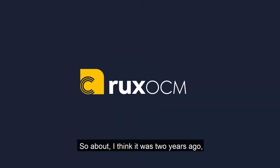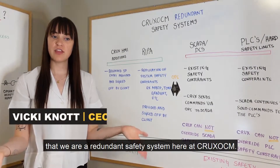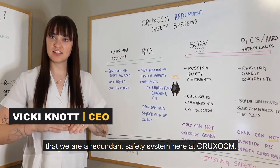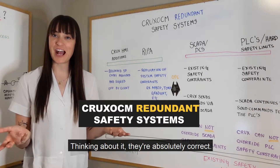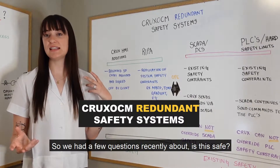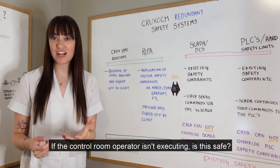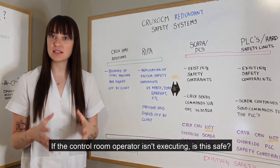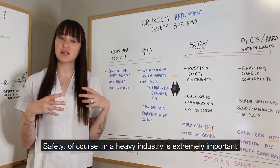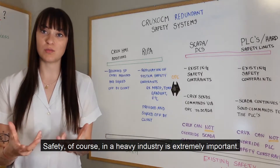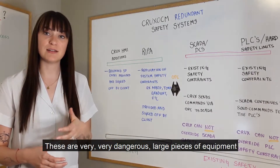About two years ago we had a customer tell us that we are a redundant safety system here at Crux OCM — thinking about it, they're absolutely correct. I've had a few questions recently about whether this is safe if the control room operator isn't executing. The answer to that is yes. Safety in heavy industry is extremely important; these are very dangerous, large pieces of equipment.